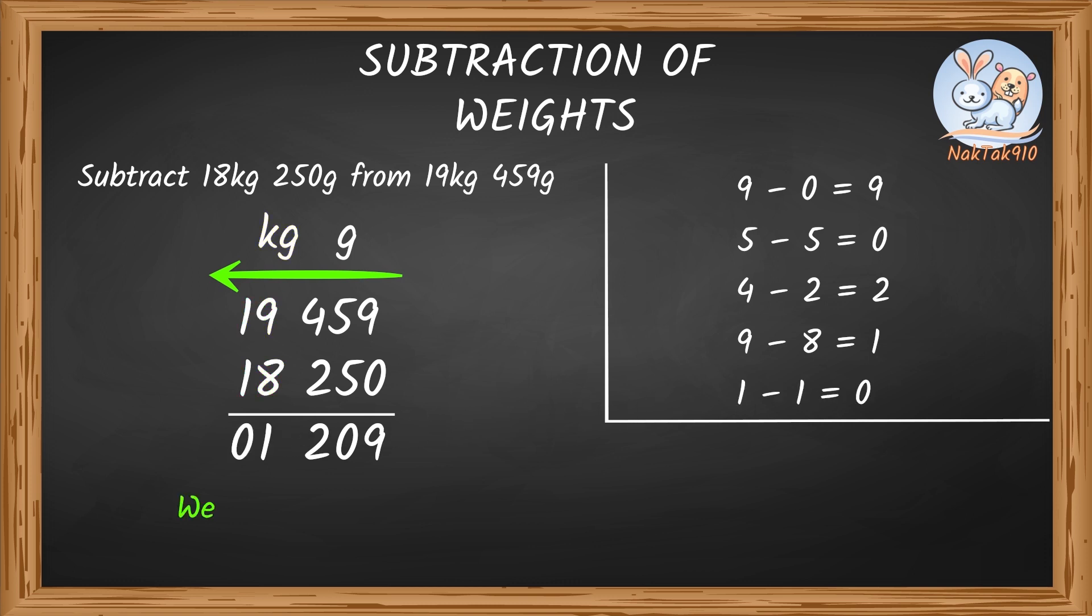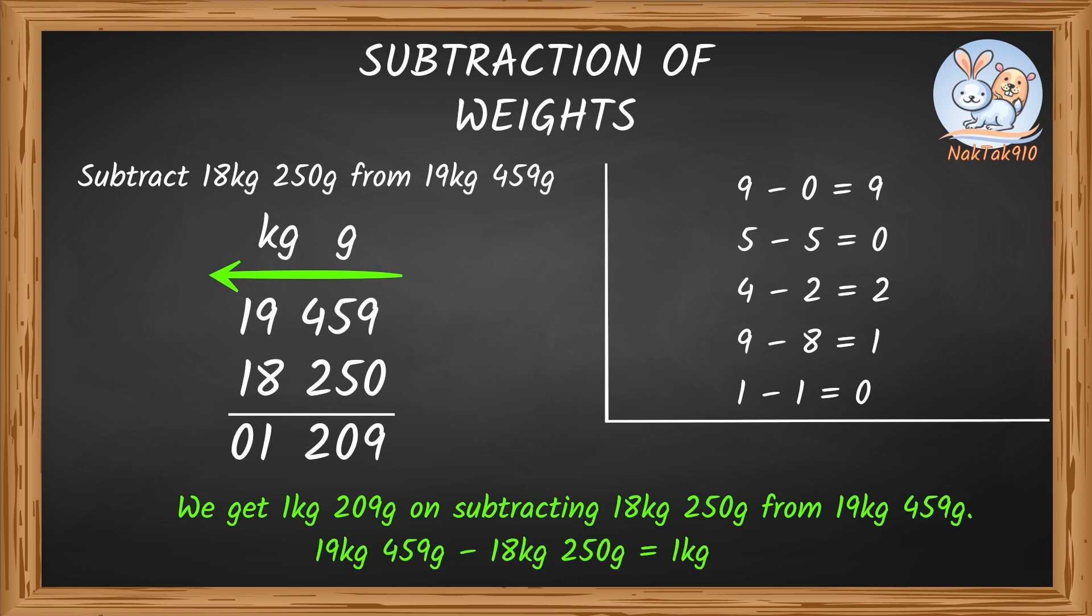So, we get 1 kg 209 grams on subtracting 18 kg 250 grams from 19 kilograms 459 grams.